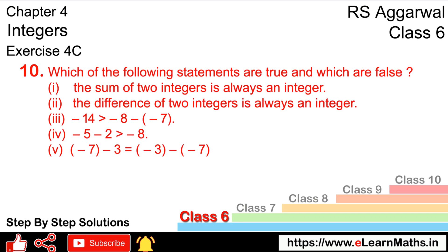Let's do question number 10 of exercise 4C. Question number 10 is: which of the following statements are true and which are false? We will tell you true and false. In the first part, we are saying the sum of two integers is always an integer.